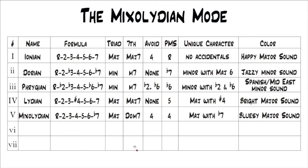We've added the Mixolydian mode to the chart. It's the fifth mode, with the formula: root, two, three, four, five, six, flat seven. The only difference between Ionian and Mixolydian is that flat seven — just take the major seventh and lower it half a step. You still get the major triad just like the other major modes, but it's the only one that creates a dominant seven chord, because a dominant seven is a root-three-five with a flat seven, while a major seven is a root-three-five with a major seventh. The avoid note is the four, just like with the Ionian mode — it doesn't mean don't play it, but typically you won't want to land on it because it's pretty dissonant.